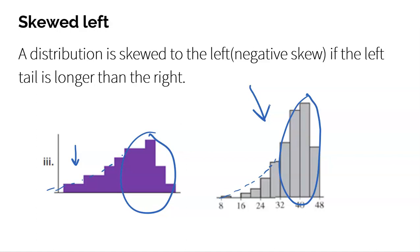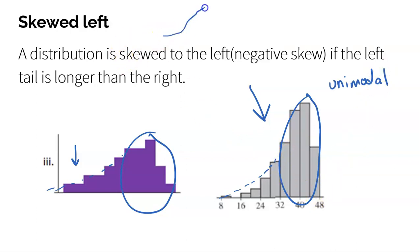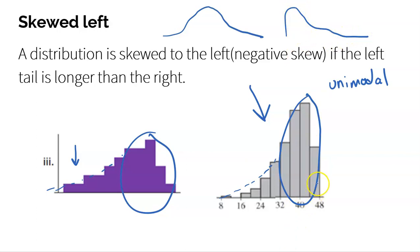A couple other words we could use: one is unimodal. If you see one peak — think about a mountain range with one peak — that would be unimodal. Even if it's skewed right with one peak on one side and the mountains lower on the other, that's still unimodal. We see one giant hump forming, so that would be unimodal.